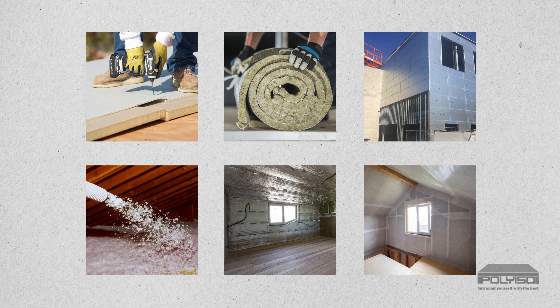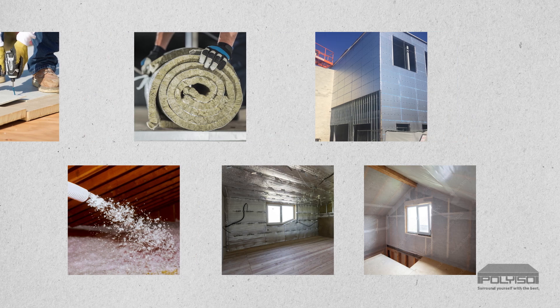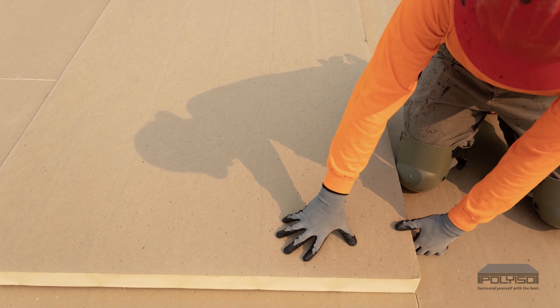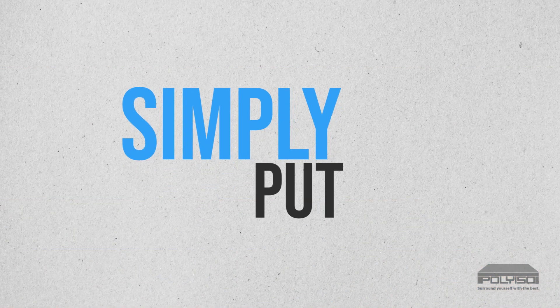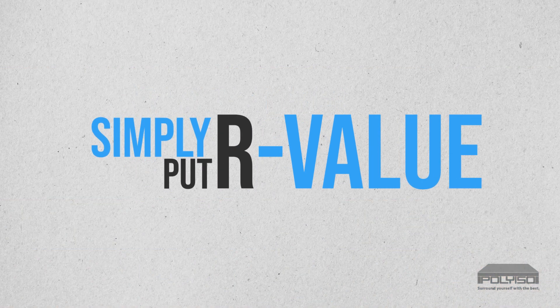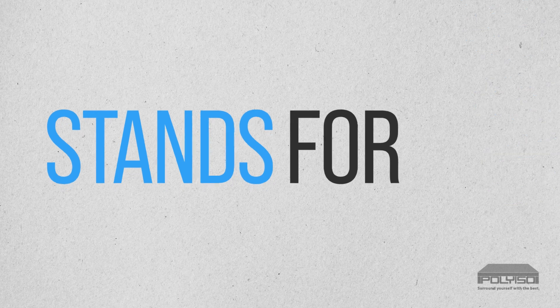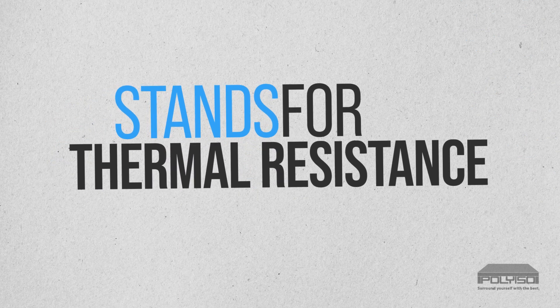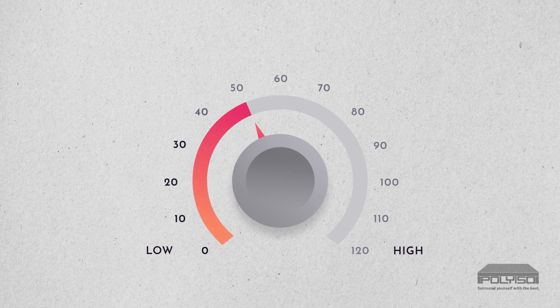Insulation products are tested and labeled with an R-value, which is used to differentiate product performance levels. Simply put, R-value stands for thermal resistance, or the measure of a product's ability to resist heat flow, and is measured through a standardized test.